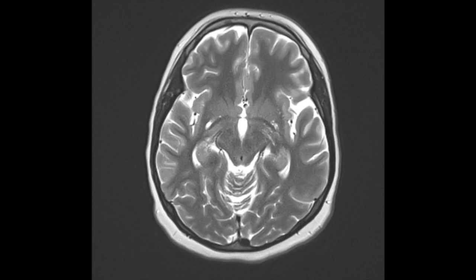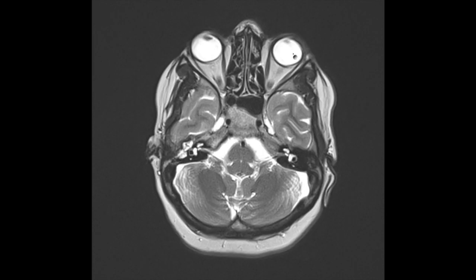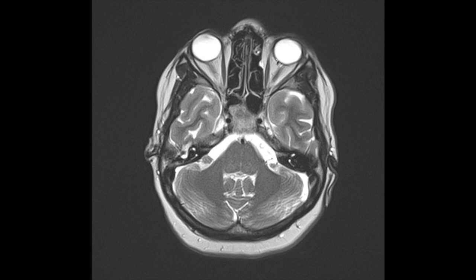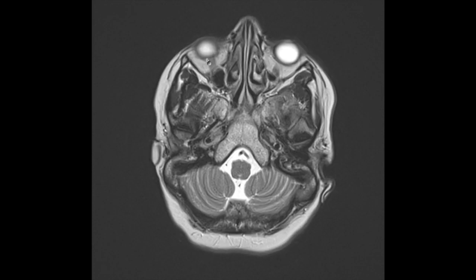Finally, we'll go through the orbits. Here we have the right and left orbits — coming superiorly we have the superior rectus on both sides. Coming down we see the optic nerve, and the lateral and medial rectus, as well as the inferior rectus.